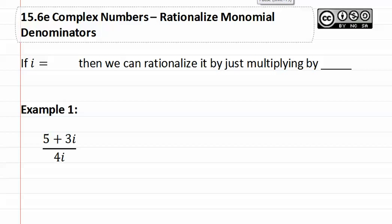15.6e complex numbers rationalize monomial denominators. If i is the square root of negative one, then we can rationalize it by just multiplying by i.